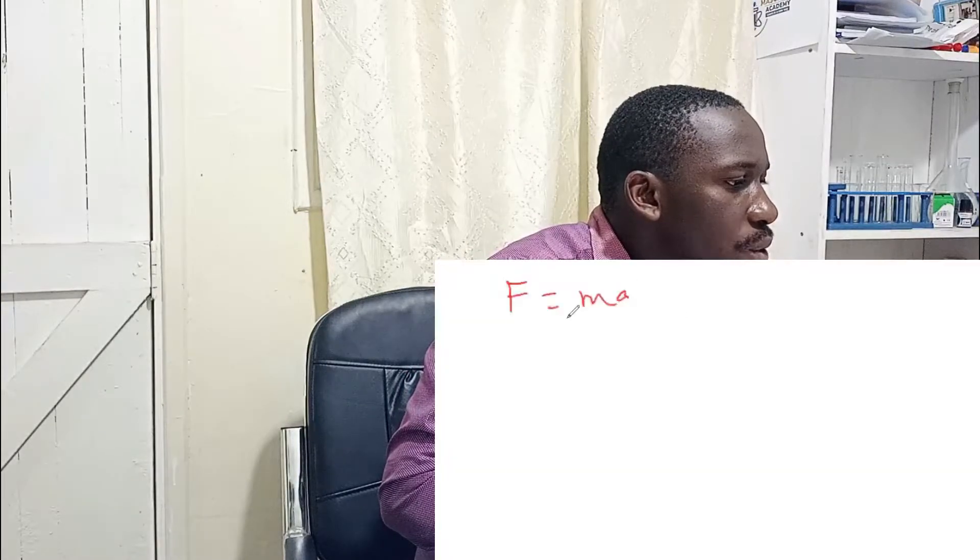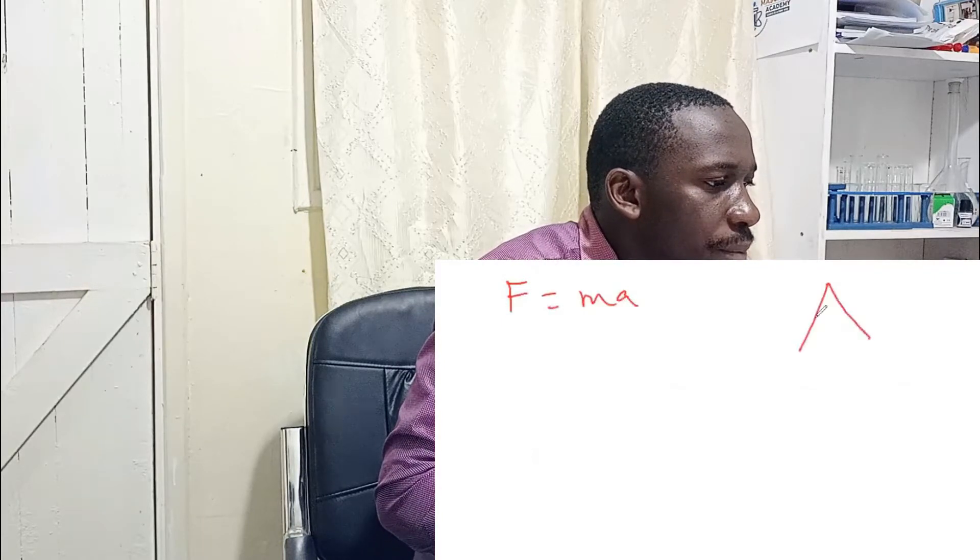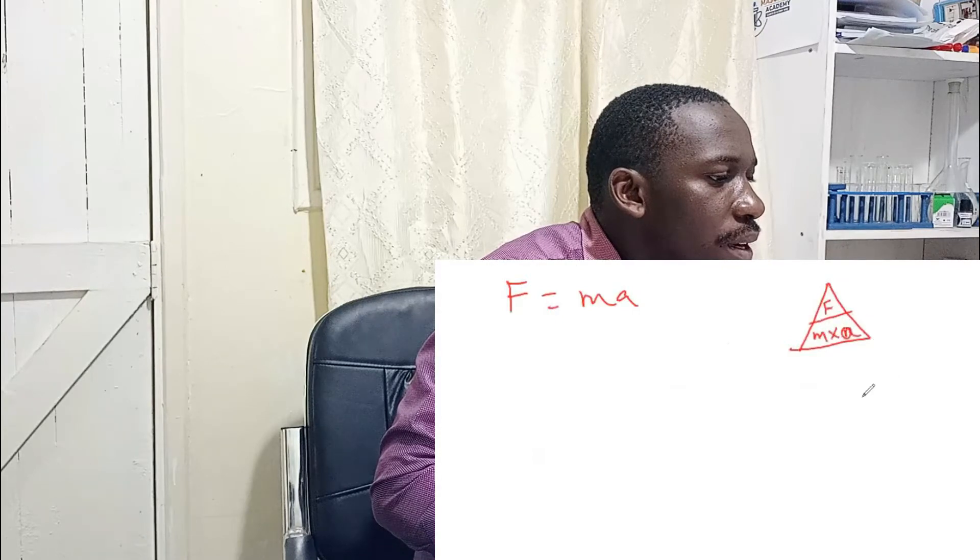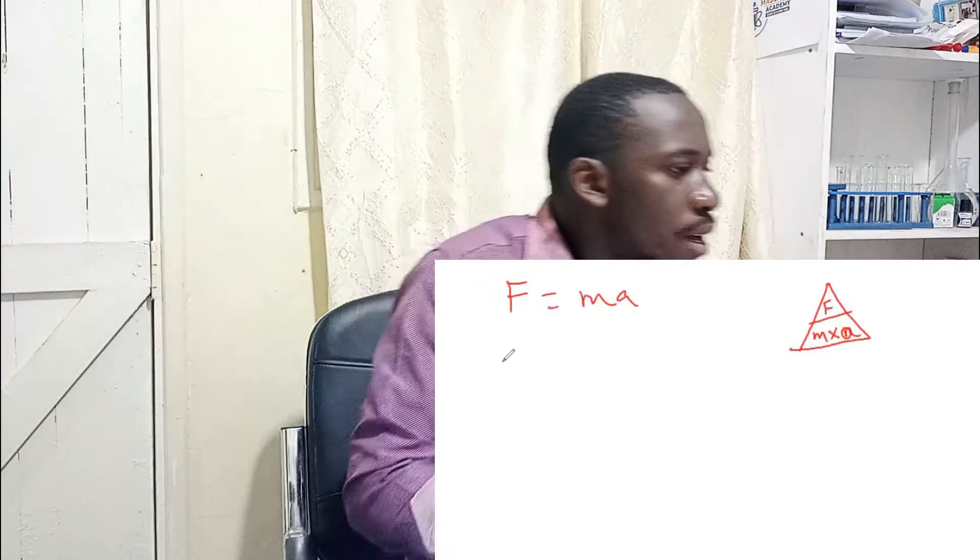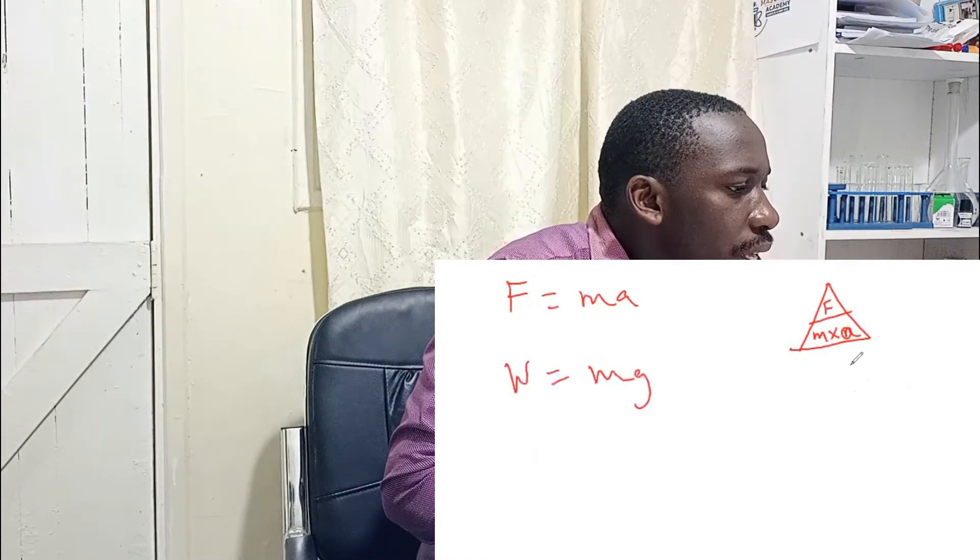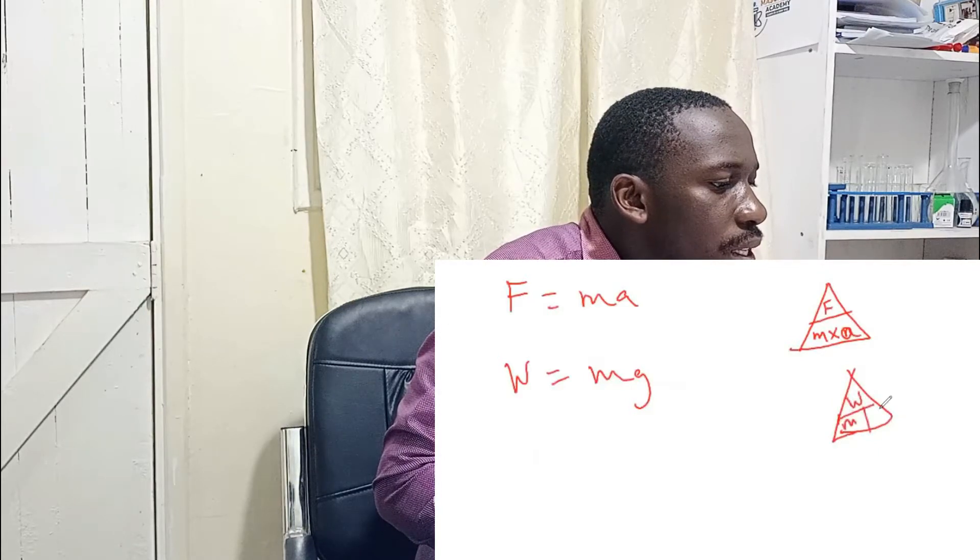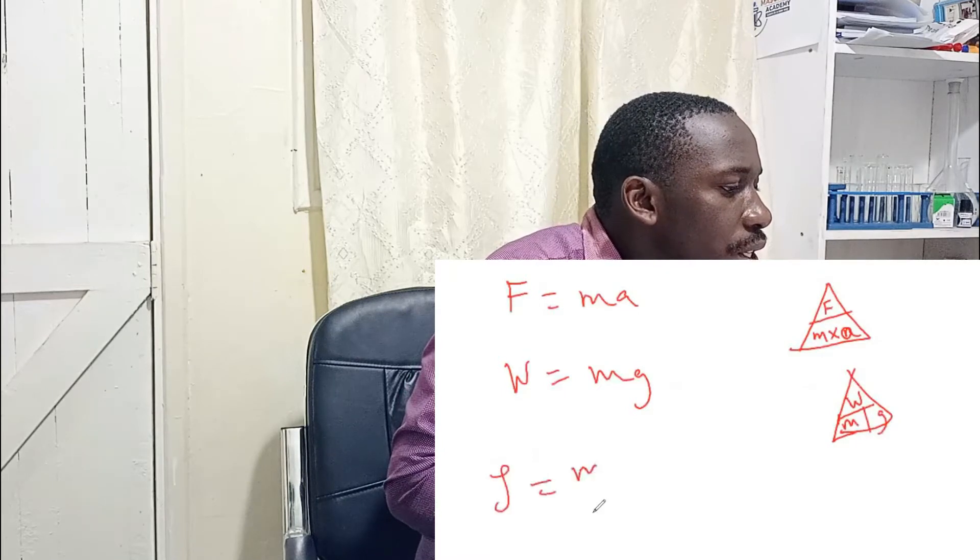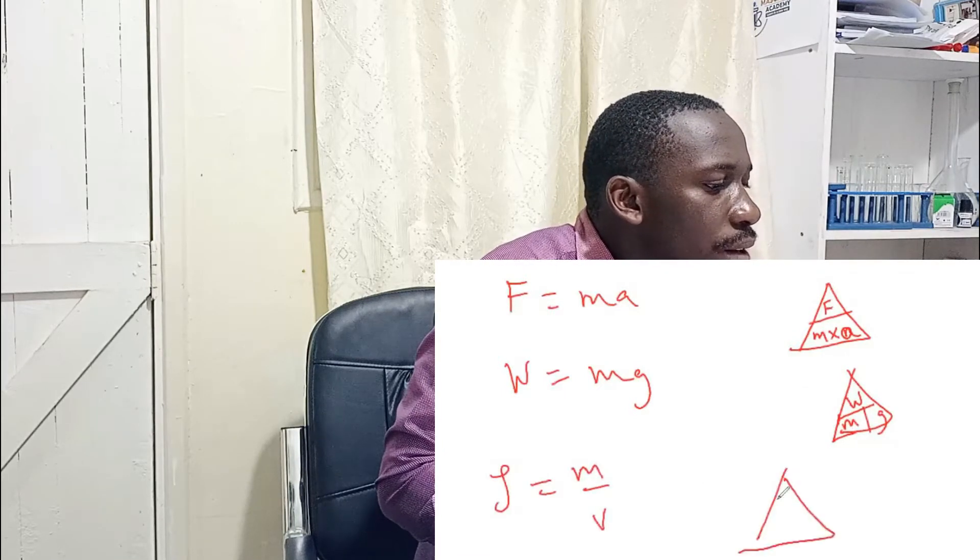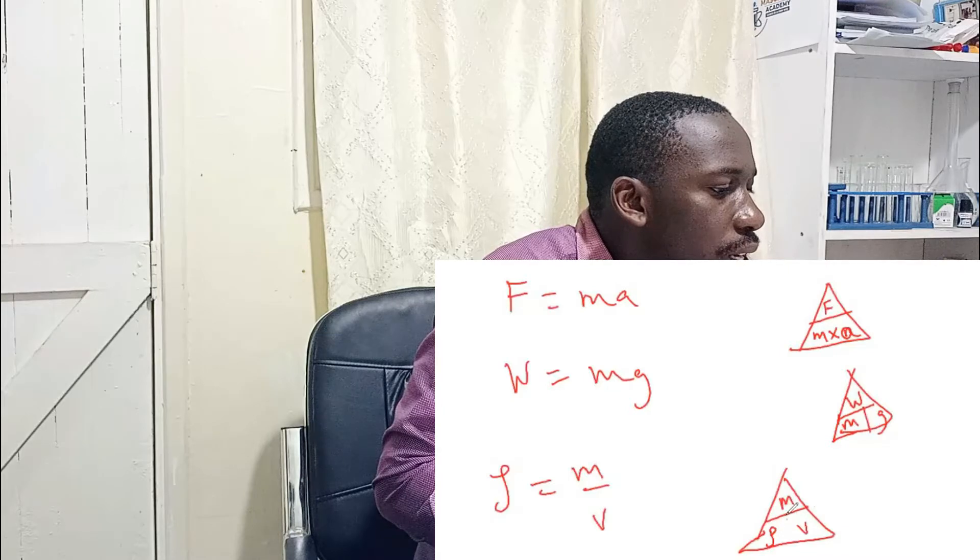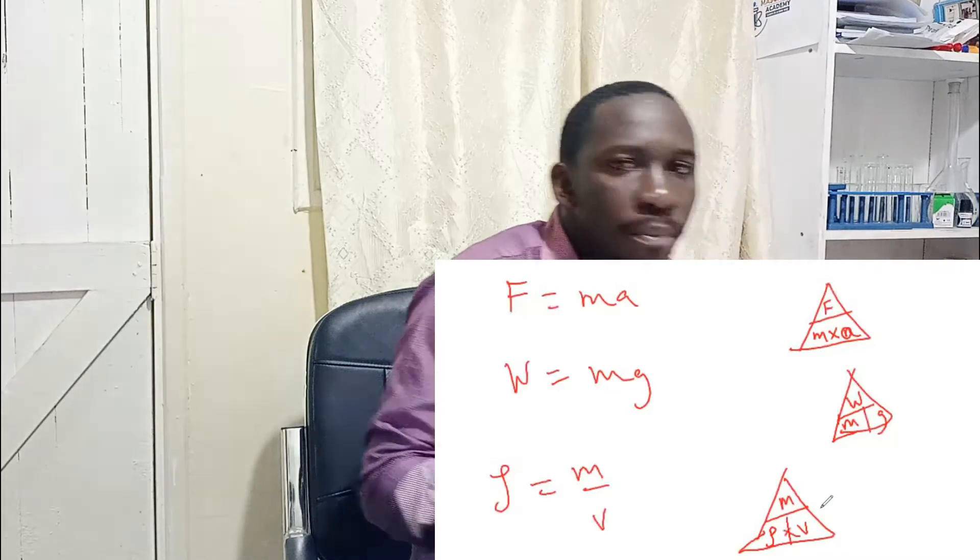You can always use a triangle method here. In a case whereby you have F = ma, how do you remember this kind of formula? You can always draw this triangle here, whereby we have here F, one side we have M and one side we have A. If you look at this, W is given by MG. There is a triangle. We can always remember this. This is W, then here we have M, this side we have G. Density is given by mass divided by volume. From the triangle, we can have this. So there is mass here, density here, and volume here.